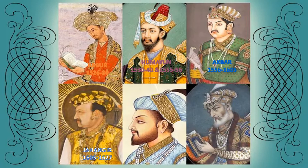Next is Shah Jahan, a great builder, who built the Red Fort in Delhi, Jama Masjid in Delhi, and the Taj Mahal in Agra — he is the greatest builder. The next important king is Aurangzeb, who ruled from 1658 to 1707. After that, the era of the greater Mughals came to an end.